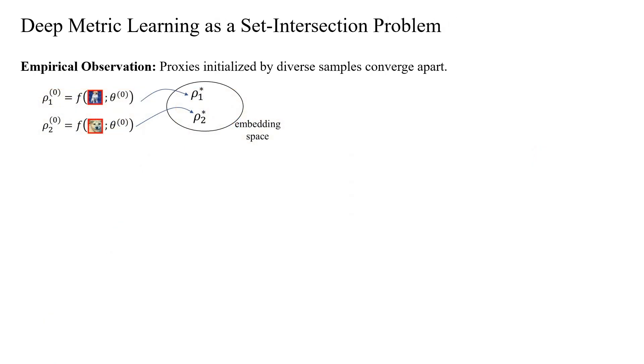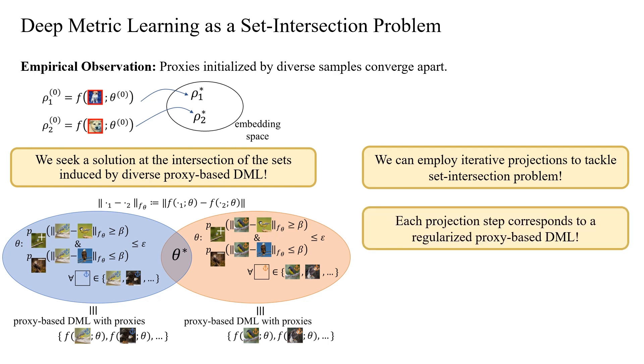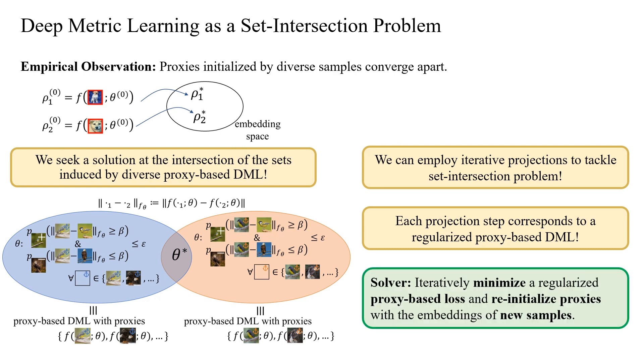Our proposed solution builds on a key empirical observation: proxies initialized by diverse samples tend to converge apart. Reframing the problem, we are now in search of a solution at the intersection of sets induced by diverse proxy-based deep metric learning. As we tackle a set intersection problem, we leverage iterative projections to address it. The beauty lies in the fact that each projection step aligns with a regularized proxy-based deep metric learning. In essence, our method involves iteratively minimizing a regularized proxy-based loss and strategically reinitializing proxies with the embeddings of new samples.